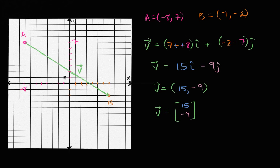And we can see that over here: 15i is going to be a vector that's 15 times bigger than the unit vector in the horizontal direction. So counting out 15 units: one, two, three, four, five, six, seven, eight, nine, ten, eleven, twelve, thirteen, fourteen, fifteen. So this right over here is the vector 15i.